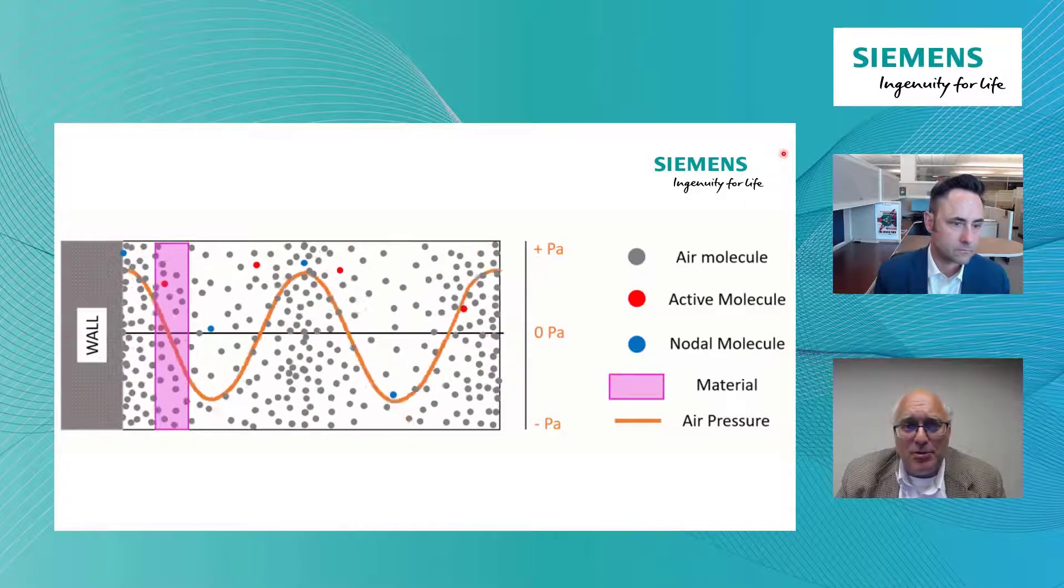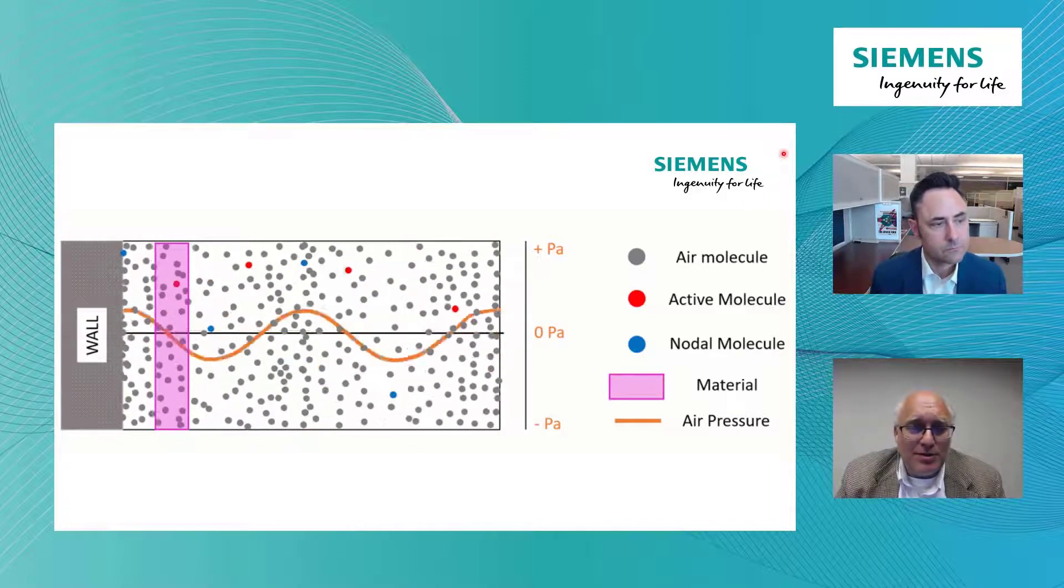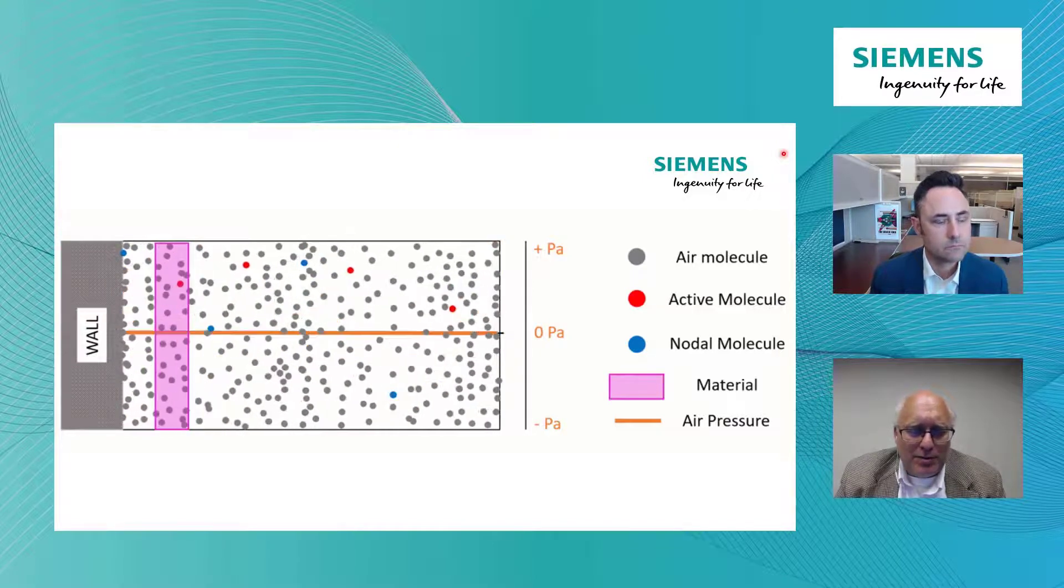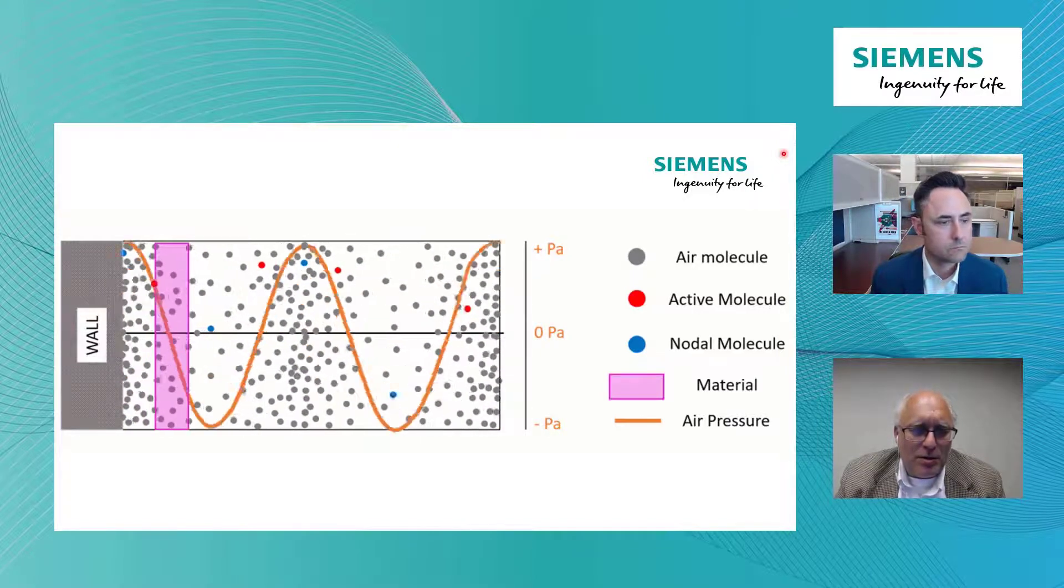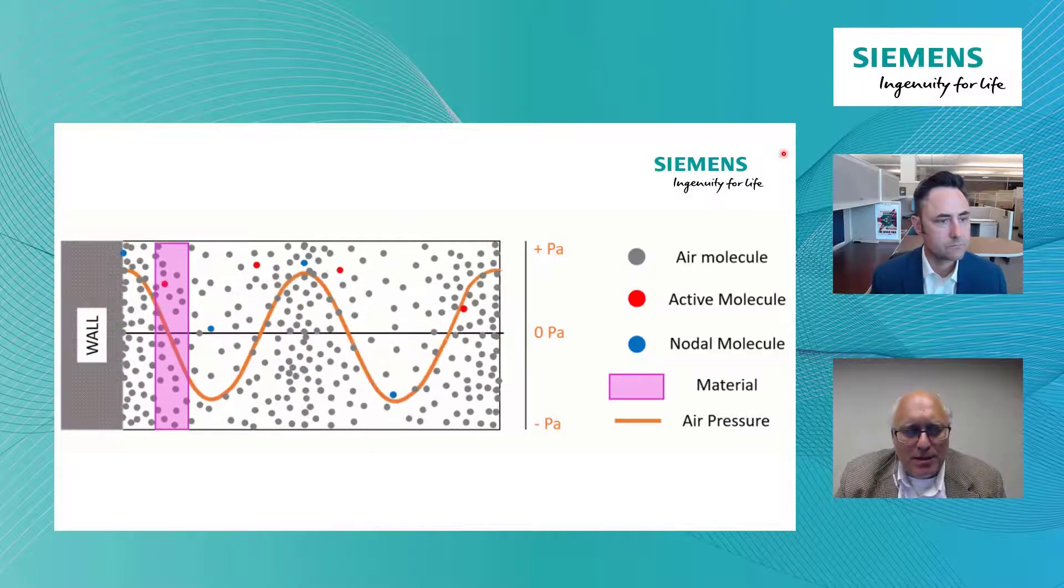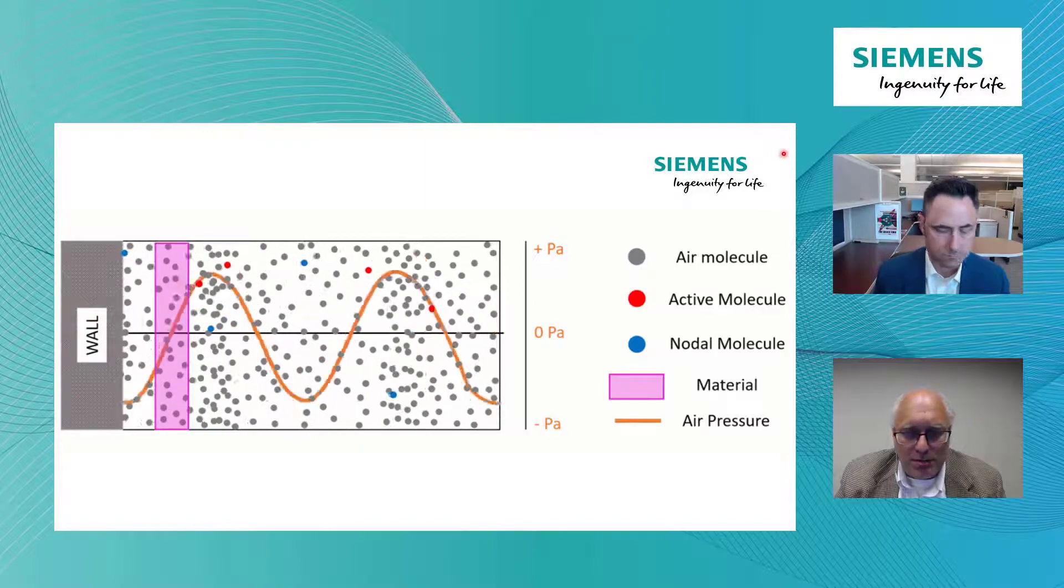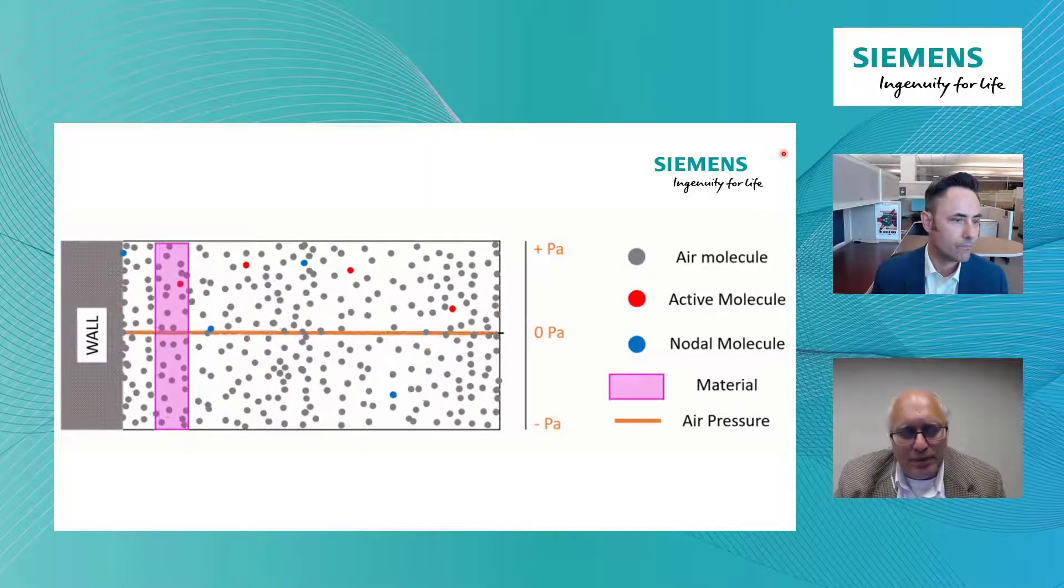But if there was maybe a particular region you wanted to take out, like your Texas region around 1,000 hertz or so, and you knew that was important, you could really be targeted with your material and save some money and cost in your engineering to do some noise abatement. Very cool. Quarter wavelength rule, they call it.